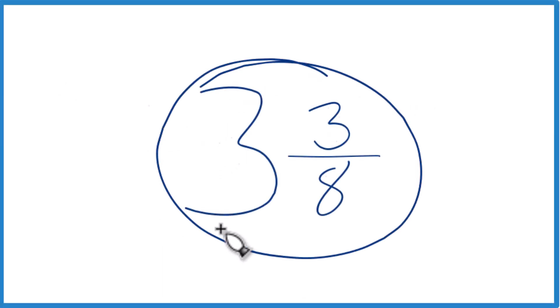Let's write 3 and 3 eighths, the mixed number, as an improper fraction. And here's how we can do it.